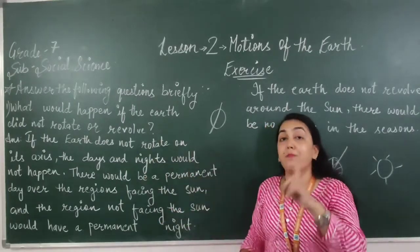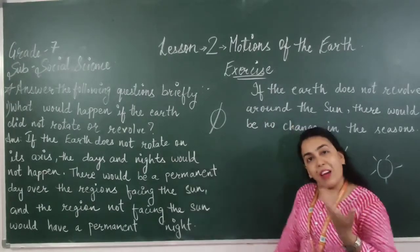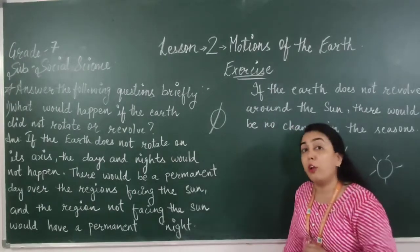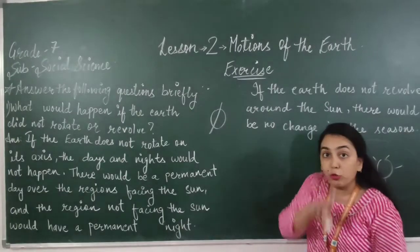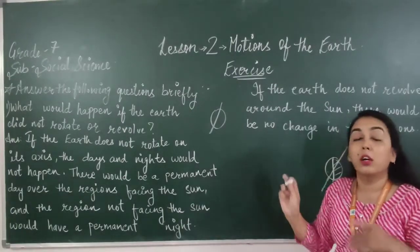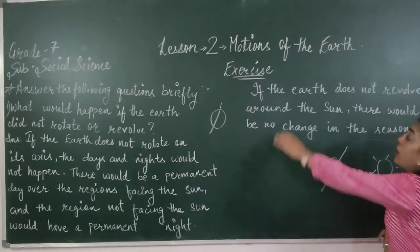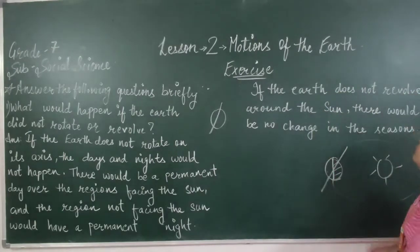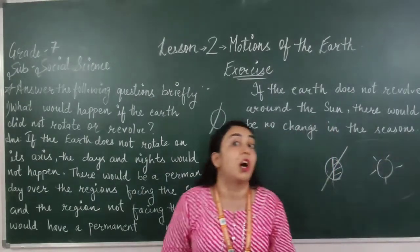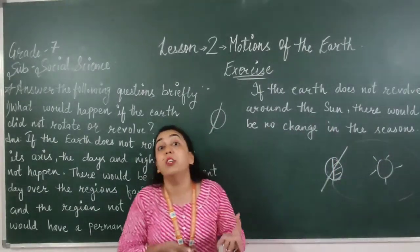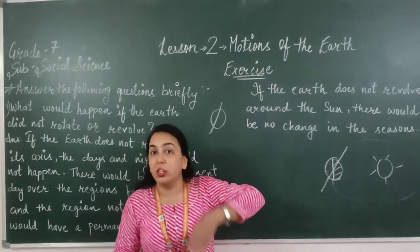And what would happen if the earth does not revolve around the sun? If the earth does not revolve around the sun, there would be no change in the seasons.